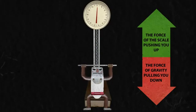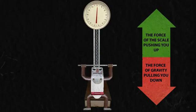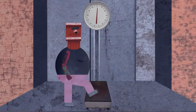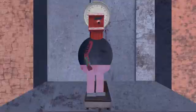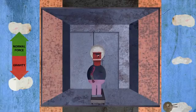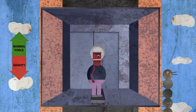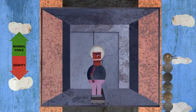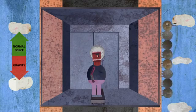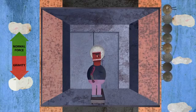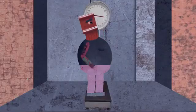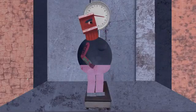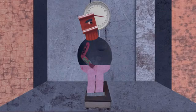Now suppose you're standing on that scale in an elevator. At first, the elevator is standing still, so you and the scale are standing still. The two forces on you are equal and opposite. You can read how hard the scale is pushing by looking at it — we call that your weight.